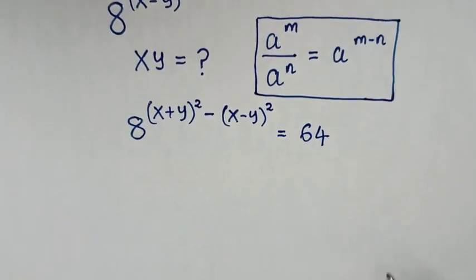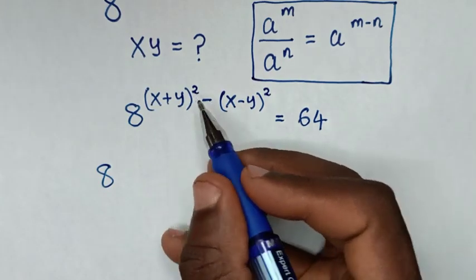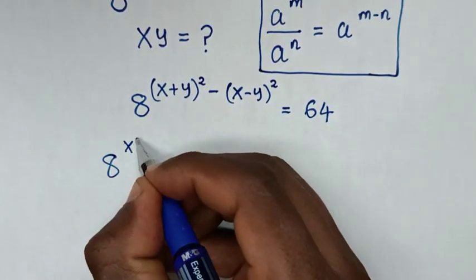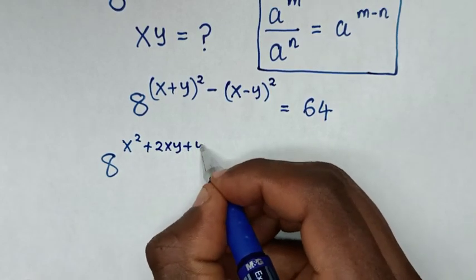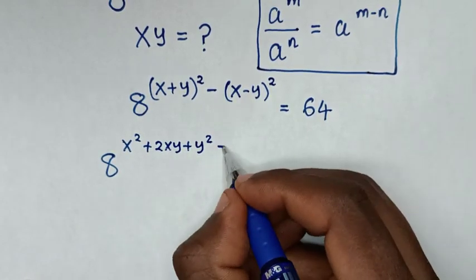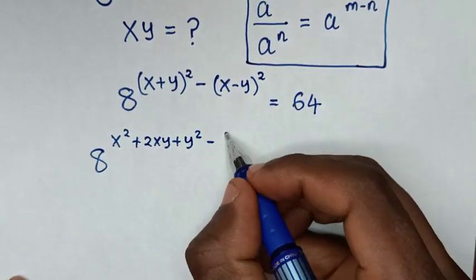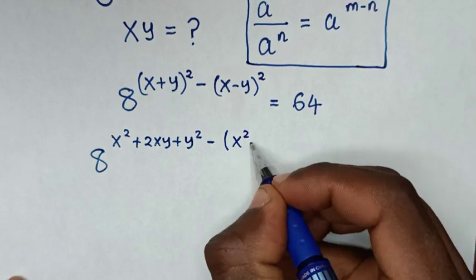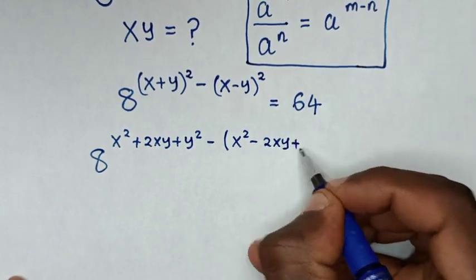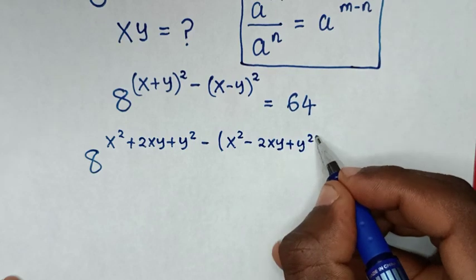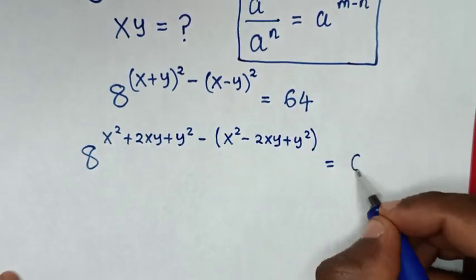Then it will be 8 — we expand (x+y)² as x² plus 2xy plus y². Then minus, we expand (x-y)², which will be (x² minus 2xy plus y²), is equal to 64.